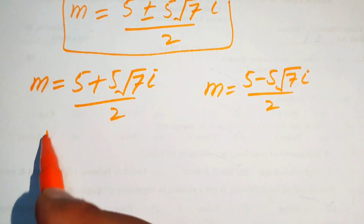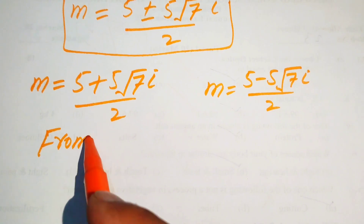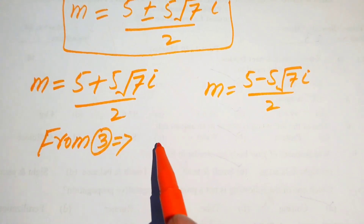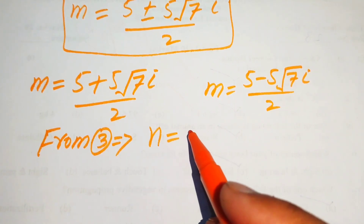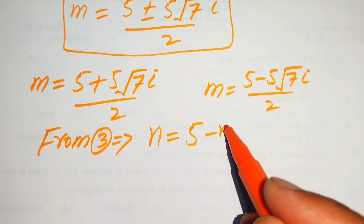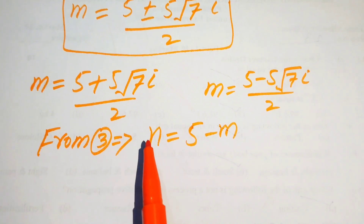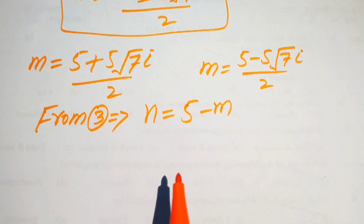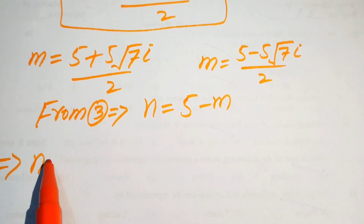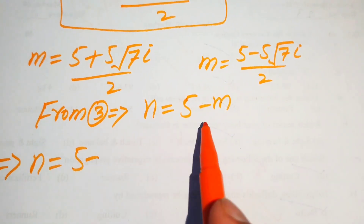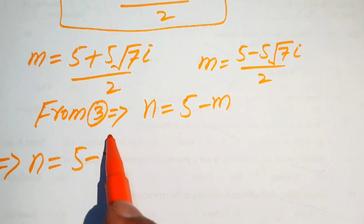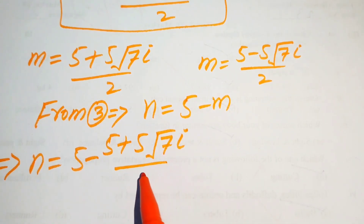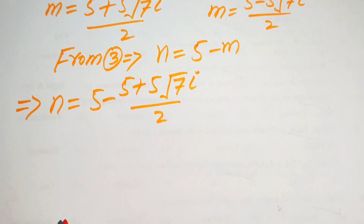Now we find the corresponding values of n using equation 3: n equals 5 minus m. We substitute the first value of m, which is (5 plus 5√7·i) divided by 2, into this equation.